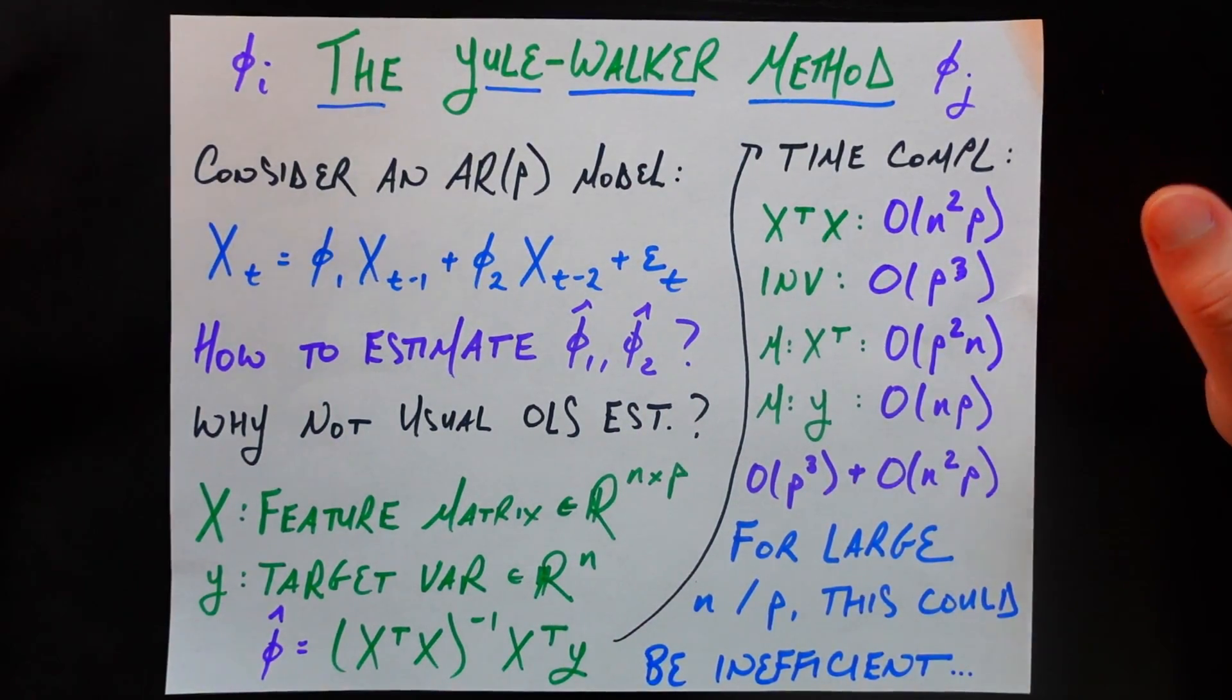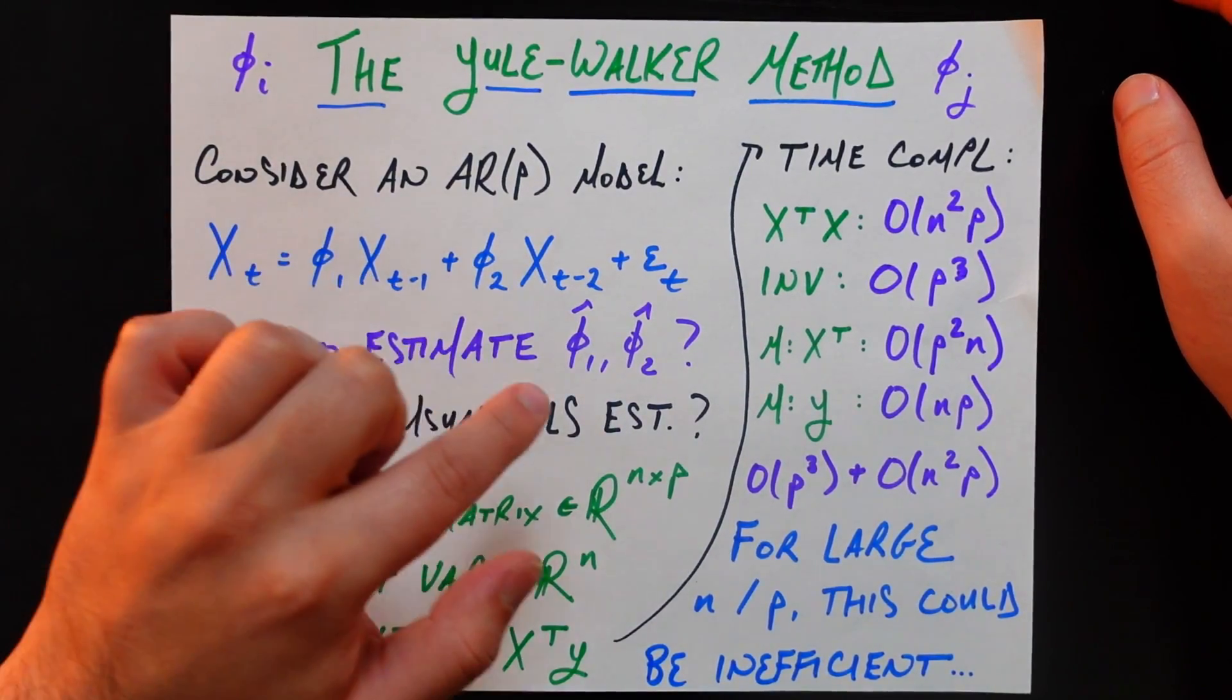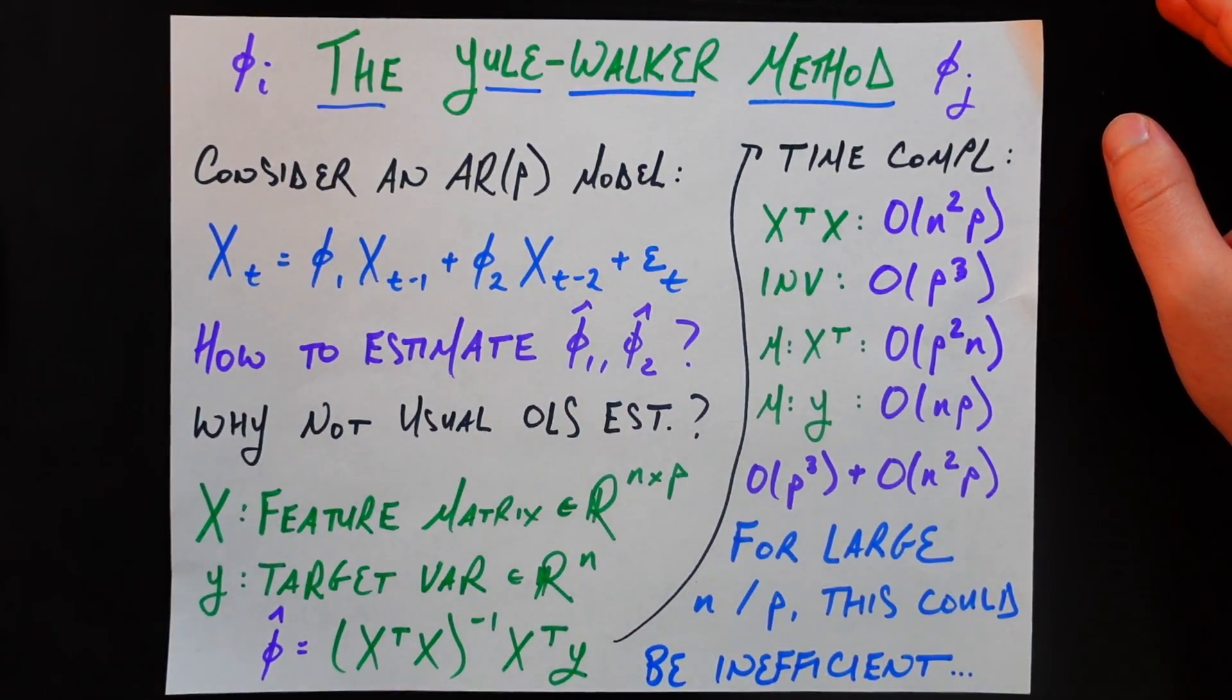And of course our goal is to estimate phi1 and phi2. So what are phi1 hat and phi2 hat? How are we going to figure those out?